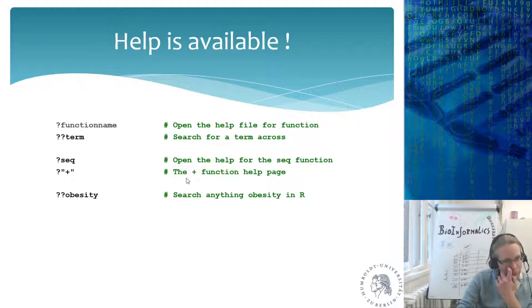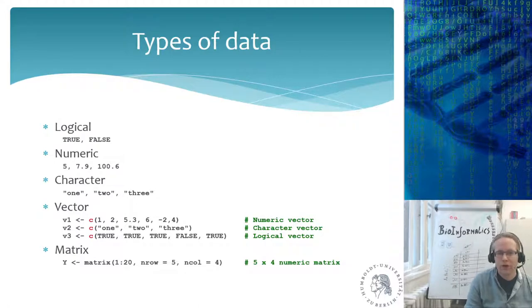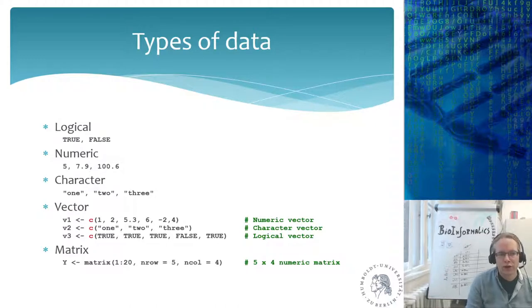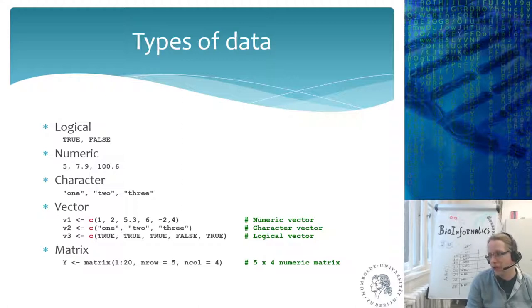Let's talk about the types of data in R. We have logical values — the boolean values, either true or false, though NA as a missing value could also be considered logical. We have numeric values, for example 5, 7.9, or 100.6. R doesn't make a distinction between an integer and a floating point number like 7.9 — in R everything is called numeric. Infinite is also a numerical value, both as an integer and as a floating point.